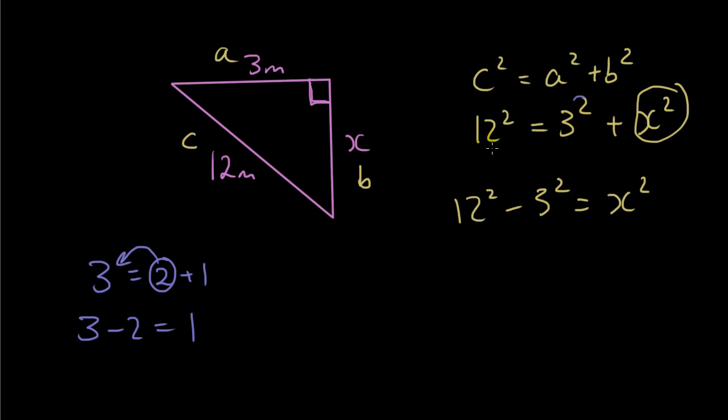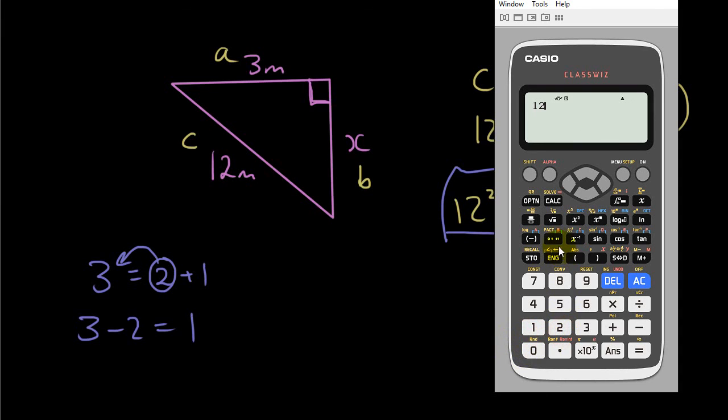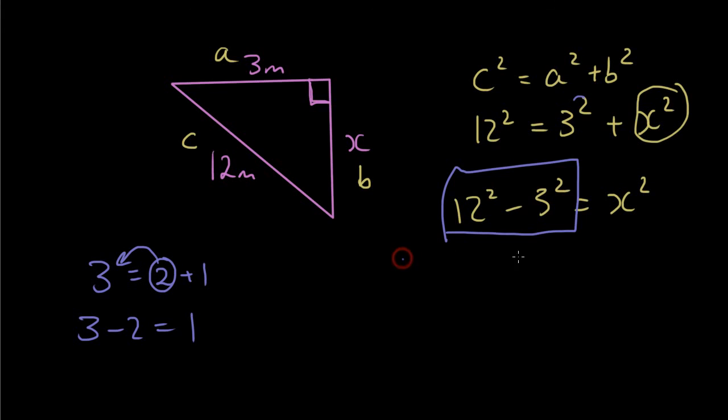I've moved the three squared to the other side. And now I can type this in the calculator. So twelve squared minus three squared. And the answer is one three five. So I can write that here. One three five equals x squared.